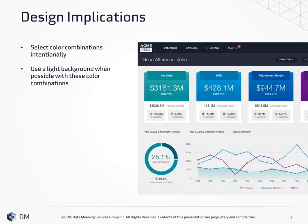So how does this apply to our designs? We select color combinations very intentionally, and we want to use a light color background with these color combinations. The effect is much weaker when the contrasting colors are displayed on a white, neutral, or low-saturation background.